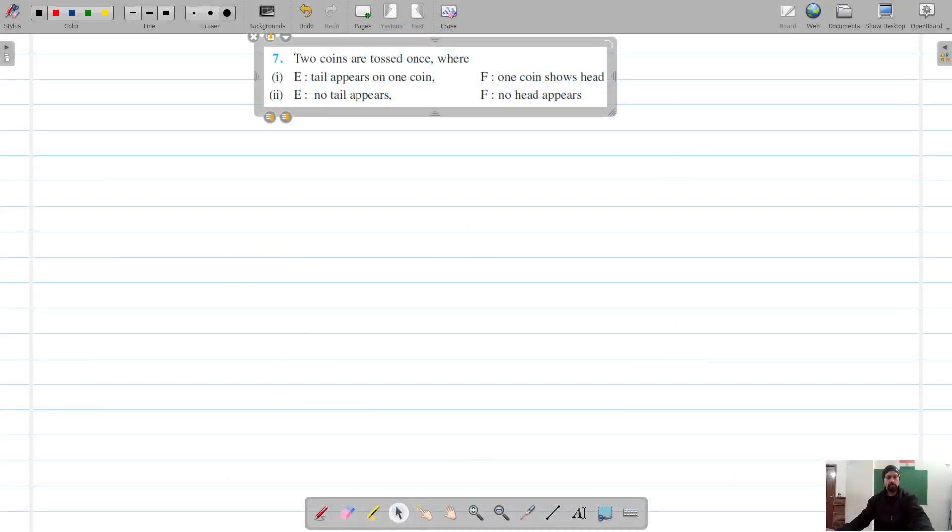Our next question is question number 7, where we have to find the probability of E given F in each of these cases.